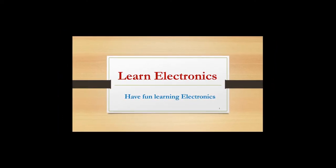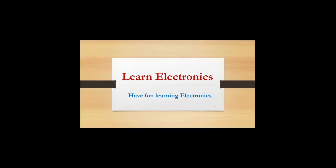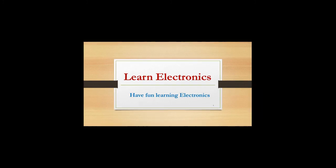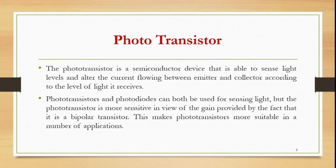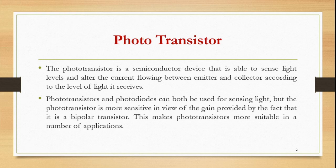Welcome to my YouTube channel 'Learn Electronics.' Today we are going to see some basic information about the phototransistor. The phototransistor is a semiconductor device that is able to sense light levels and alter the current flowing between emitter and collector according to the level of light it receives. It is a sensor as well as an electronic device.